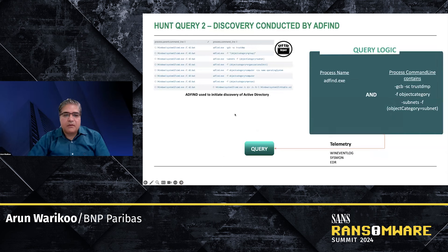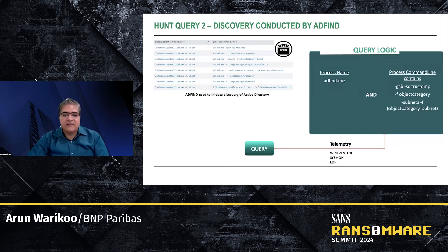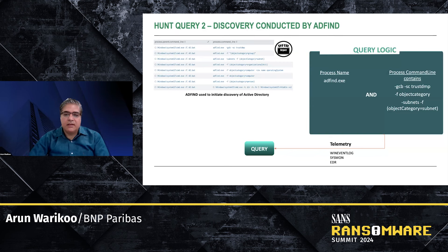The second query is around discovery conducted by AdFind. AdFind is a query tool you can use to enumerate and search Active Directory, and it's heavily abused by threat actors. So you want to hunt on that as well, and this is the query on the right that you can use. When you put these two queries together and see hits coming in from the same system, that gives you an indication that this could be a case of discovery from post-compromise. That's how you use two different queries to test your initial hypothesis.